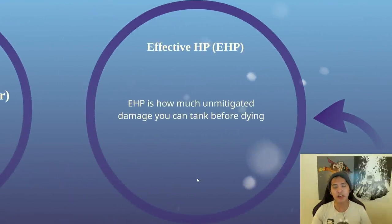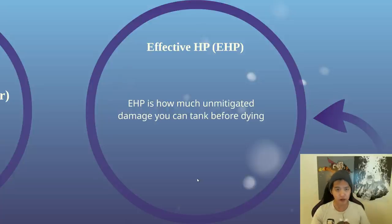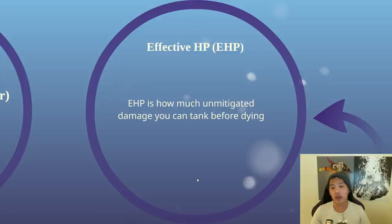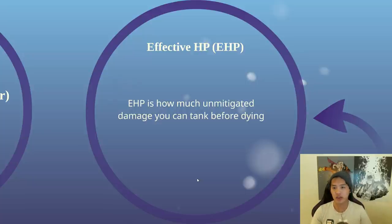So we have effective HP. This is the first concept that you should understand. You'll hear this term thrown around a lot — effective HP, EHP. And what exactly does that mean? EHP is how much unmitigated damage you can tank before dying. Unmitigated damage is just the simple tooltip damage. If your hero says he does 100 damage, that's the unmitigated damage.